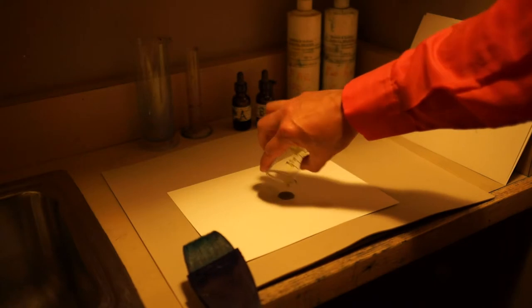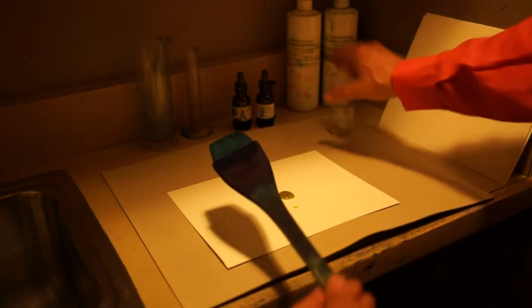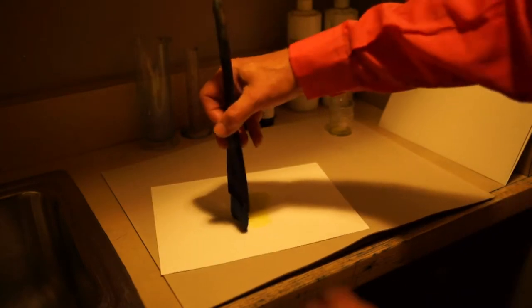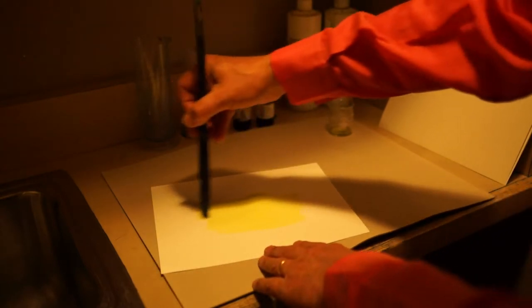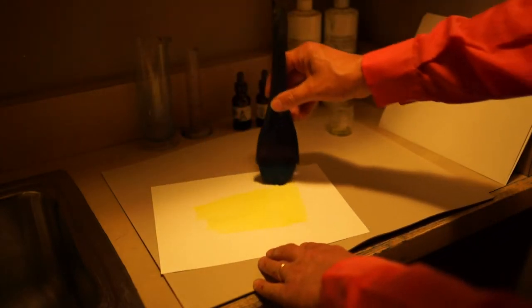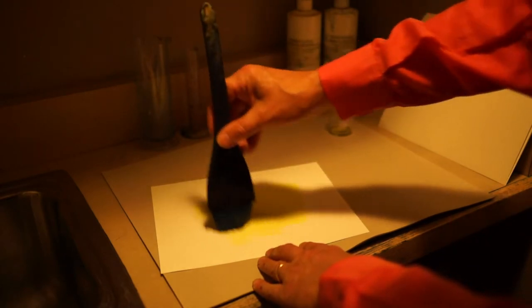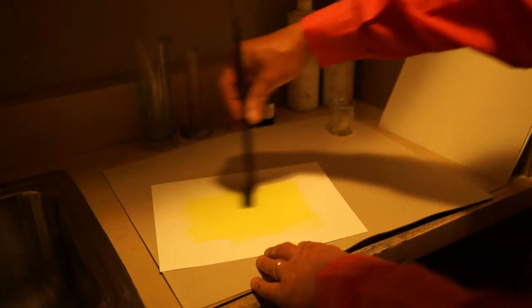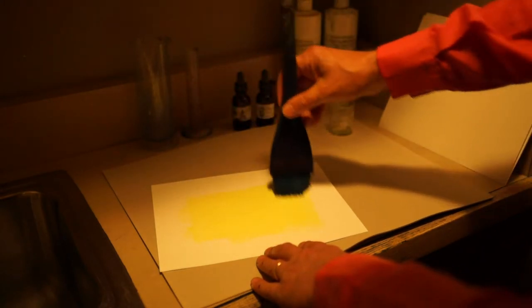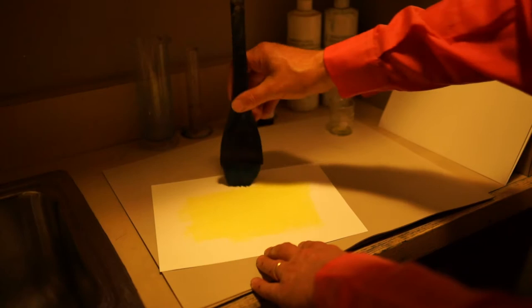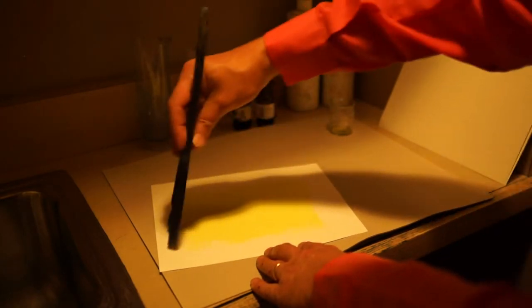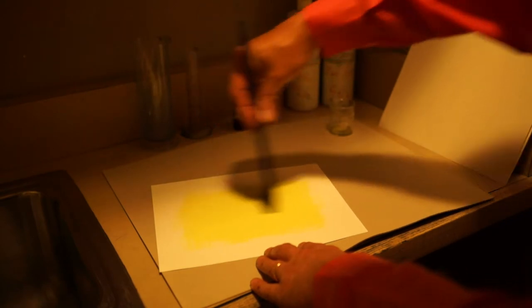So here's our puddle, and some people like to mark off the area that they want to sensitize so they know it's large enough for 4x5, but I always think it's pretty easy to guess. And what we're doing here is just pushing the solution around back and forth, and we want to get this as even as possible, because in the darker areas of the image, you will see streaks if it isn't even.